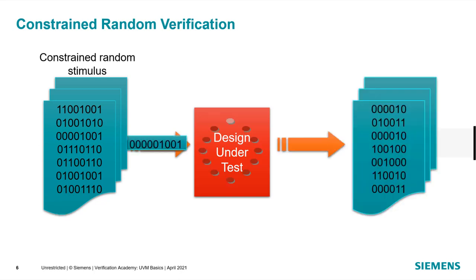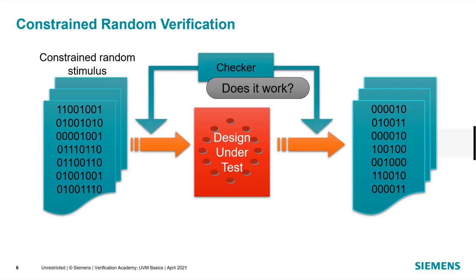We send the stimulus into the design under test, which operates on it and sends values out. Now we need to understand exactly what happened, because we don't know exactly what the input stimulus is and therefore we don't know exactly what the result is. So we have to build a self-checking environment — creating checkers that look at the inputs and outputs, with some notion of a reference model or other way of determining correctness. Does it work? That's one of the most important questions in verification.